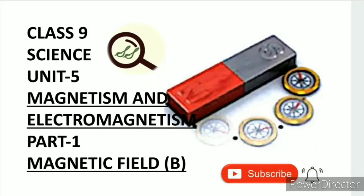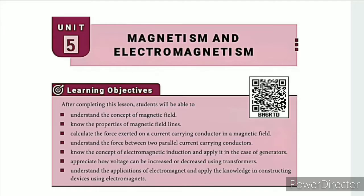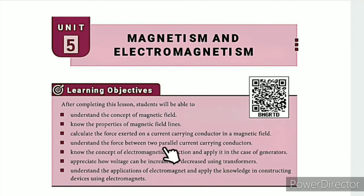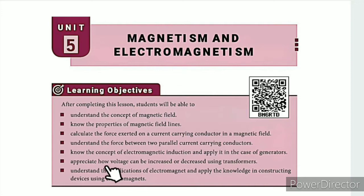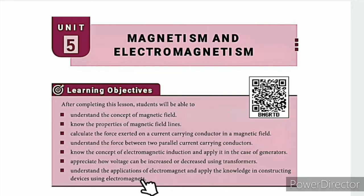Greetings from SS Class 9 Science, Unit 5: Magnetism and Electromagnetism, Part 1 — Magnetic Field. The learning objectives are: understand the concept of magnetic field; know the properties of magnetic field lines; calculate the force exerted on a current-carrying conductor in a magnetic field; understand the force between two parallel current-carrying conductors; know the concept of electromagnetic induction and apply it in the case of generators; appreciate how voltage can be increased or decreased using a transformer; understand the applications of electromagnets and apply the knowledge in constructing devices using electromagnets.